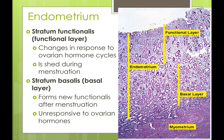When a woman has her period, those functional layers slough off, damaging the blood vessels in those layers and causing bleeding. Once all the functional layer has sloughed off, the basal layer rebuilds it — through days 5 through 28 it rebuilds that functional layer, and then the woman has her period and the whole cycle happens all over again.